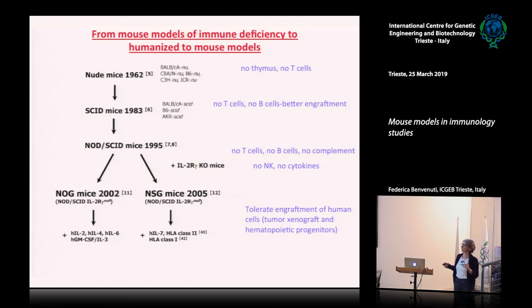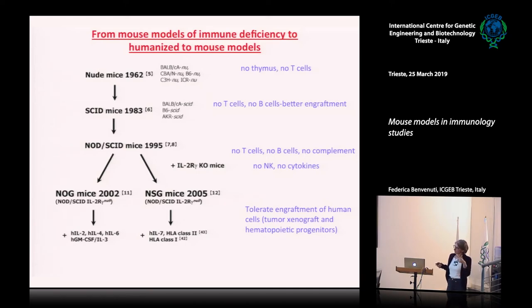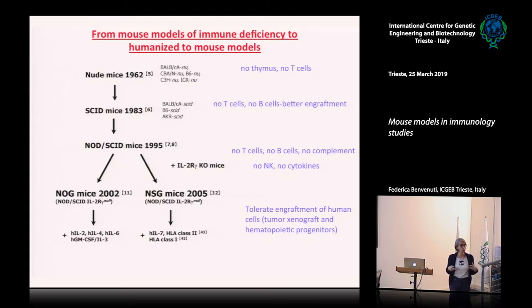A second mouse model was discovered, again due to spontaneous mutation. These mice are more immune-deficient as they lack T cells and B cells, and therefore can allow better engraftment of human hematopoietic stem cells. There was then a lot of further improvement — for instance in 1995 by crossing SCID mice to non-obese diabetic mice, reaching a cross that was even more immune-deficient, lacking T cells, B cells, complement, and NK cells. This again allowed human hematopoietic cells to be tolerated and to develop in part in this mouse recipient.